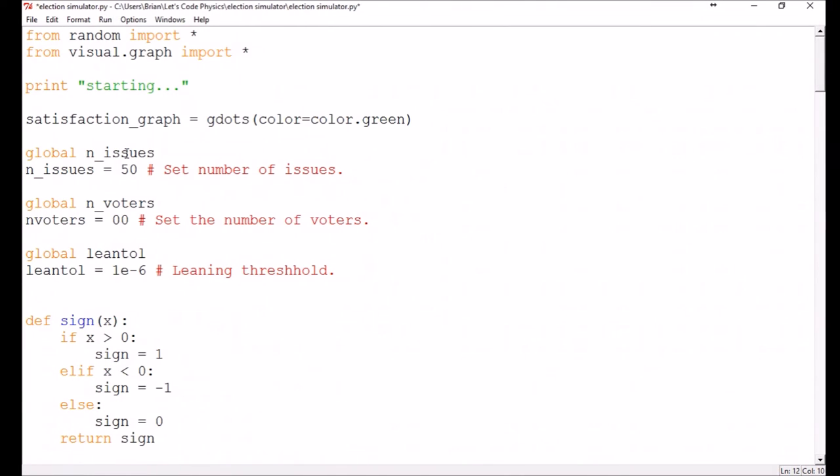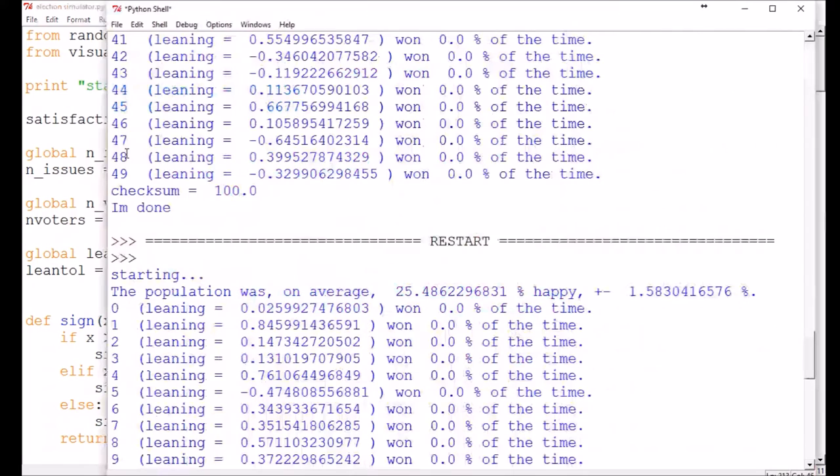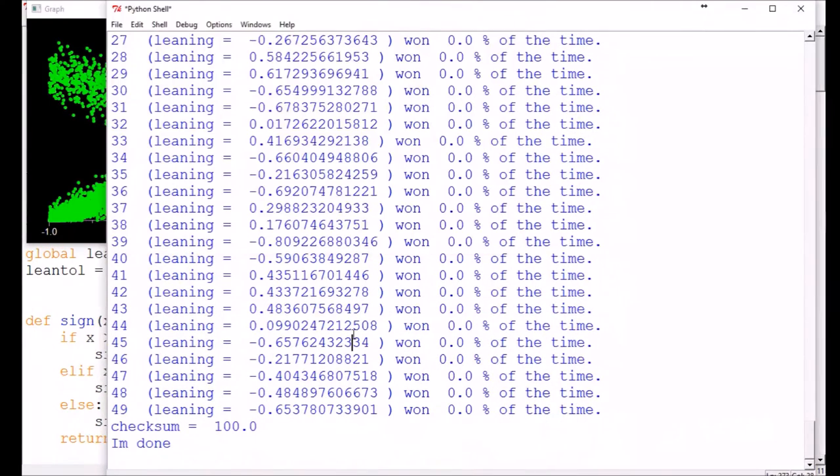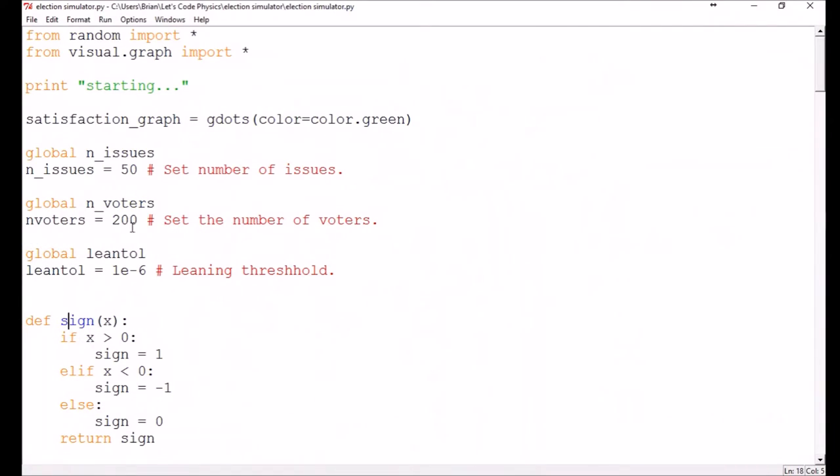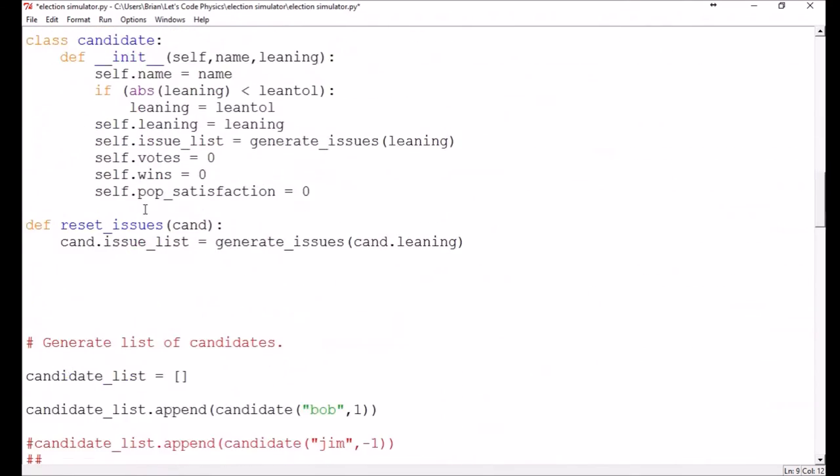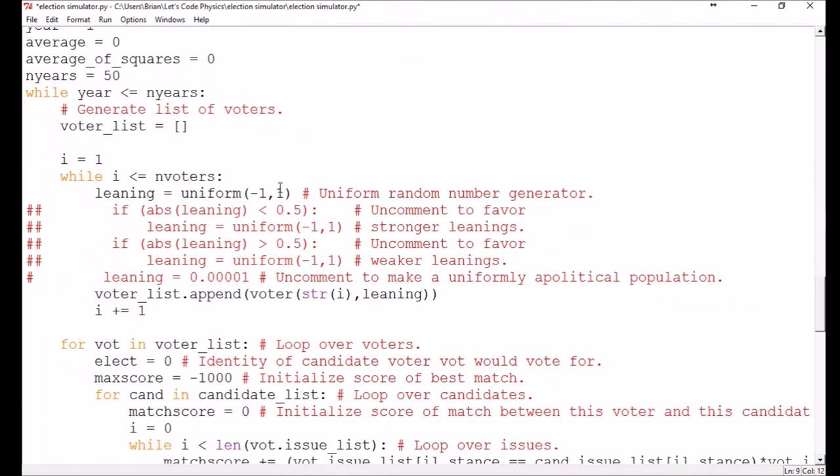Okay, but what if we change the number of voters? Let's suppose that we doubled our population in size. Well, it certainly hasn't changed the graphical distribution, and it looks like the average is still around 25%.